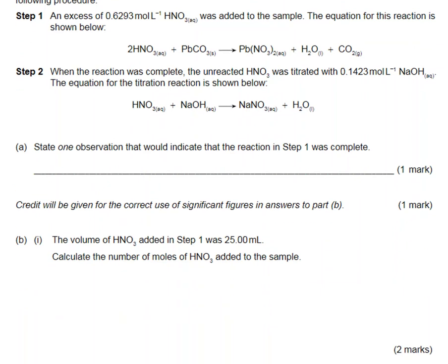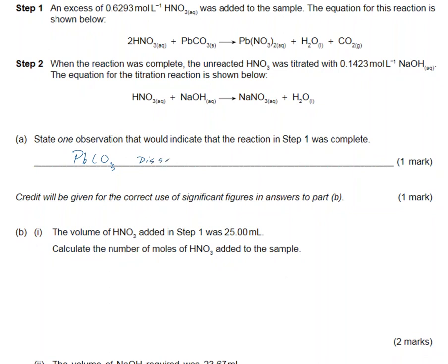The first question says state one observation that would indicate the reaction in step 1 was complete. There's actually two, so I'll go through both. The lead carbonate dissolves - you see it disappear - and also the carbon dioxide bubbles stop being produced.